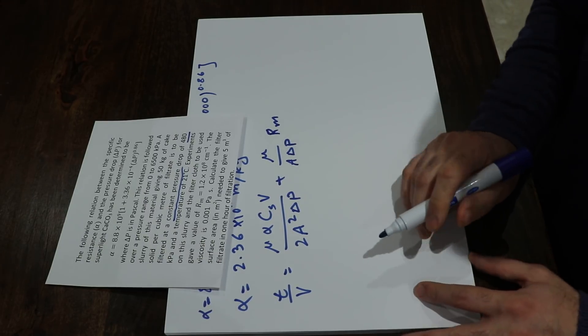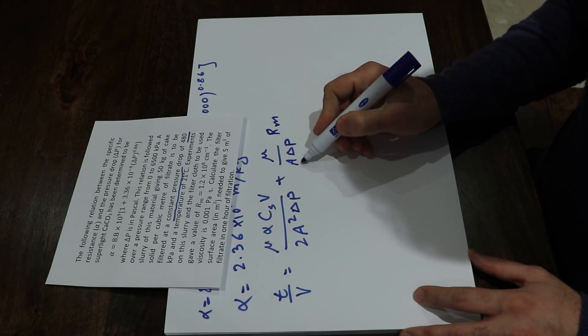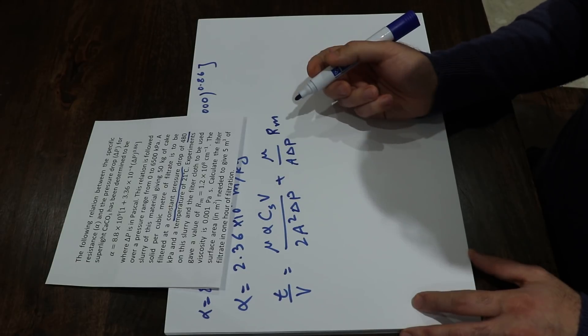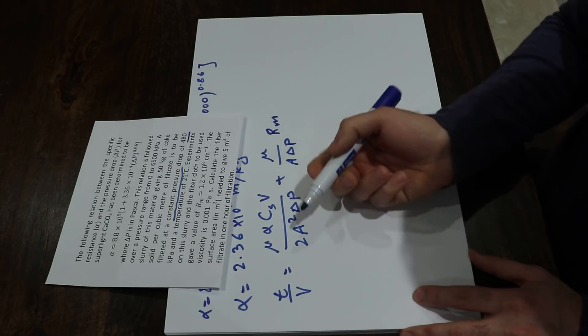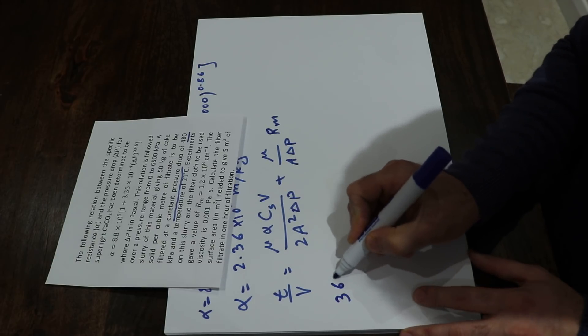And now the question is about the surface area, that is a. All other parameters are given in the question, so you just need to plug. After one hour, that is 3600 seconds, divided by V, that is 5.